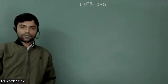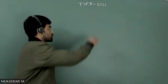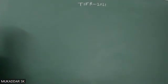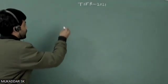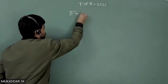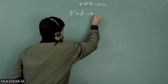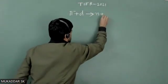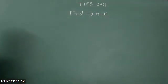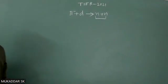Hello students, today we are going to solve a question from particle physics. This question was asked in TI for 2021. The question states: there is an s-wave capturing of pi minus meson by neutron in the ground state, which produced two neutrons. We have to calculate the total orbital quantum number and the total spin quantum number of the product.